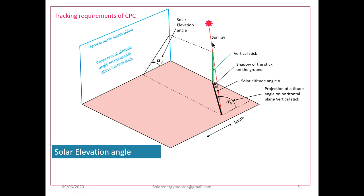Now, tracking requirements of CPC. Before going into tracking requirements, let us understand the concept of solar elevation angle. A sketch shows a horizontal plane — this is the ground — and a vertical plane. At the end of the horizontal plane there is a vertical stick. The sun is here and a sun ray is passing over this stick. When the sun is incident on the stick it casts a shadow on the horizontal plane, shown in black.